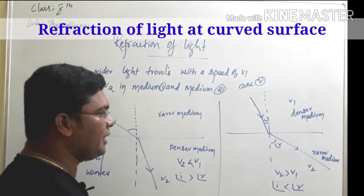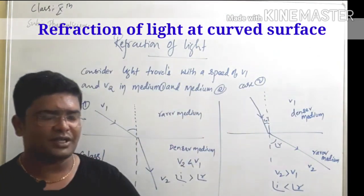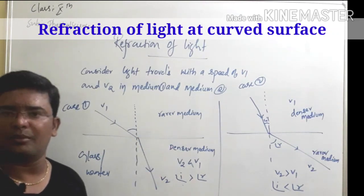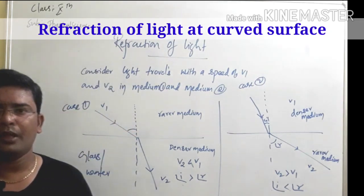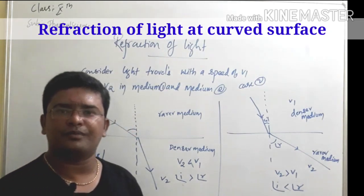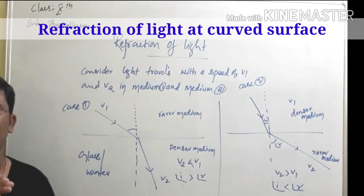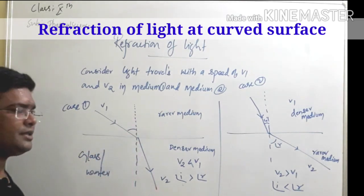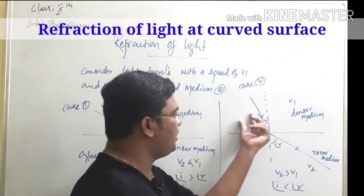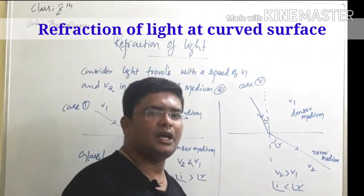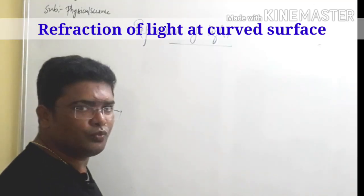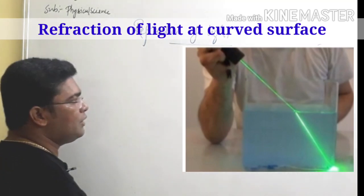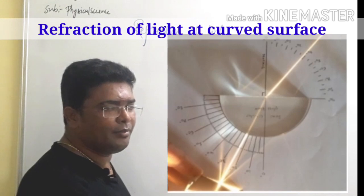So during refraction: the medium in which speed of light is more is called the rarer medium, and the medium in which speed of light is less is called the denser medium. When light enters from rarer medium to denser medium, it bends towards the normal. When light enters from denser medium to rarer medium, it bends away from the normal.